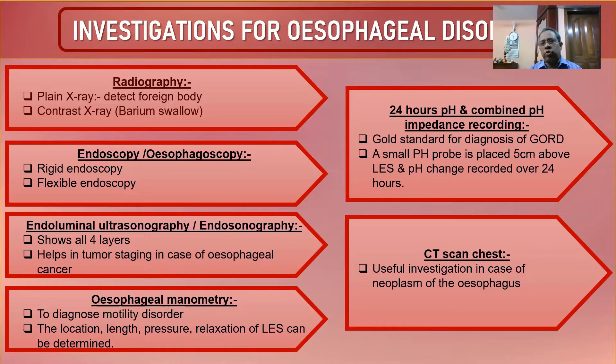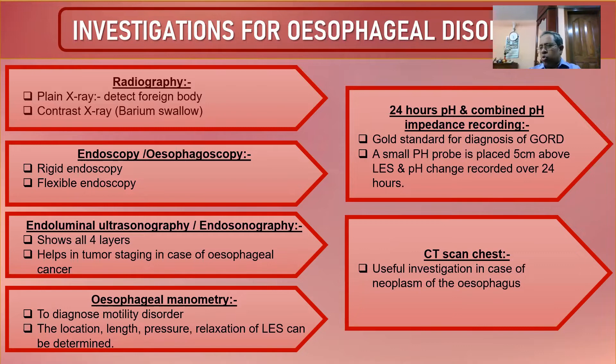Endoscopy: when only the esophagus is examined it is called esophagoscopy. When the esophagus, stomach, and duodenum up to the second part are examined, it is called upper gastrointestinal tract endoscopy — upper GI endoscopy.